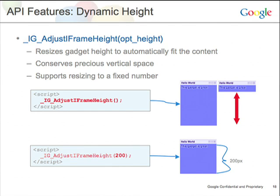The dynamic height library is also very important — it conserves space for your users on their iGoogle homepage, and it's also just a single-call JavaScript method. You can also pass in an optional number as a parameter to tell your gadget to resize to a specific height, giving you more control over how tall your gadget will render. The reason we have a method like this is because all gadgets are actually rendered in iFrames, and so it requires some tricky protocols to have the parent container resize the child iFrame that your gadget is rendering in.